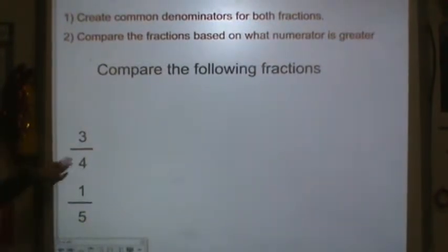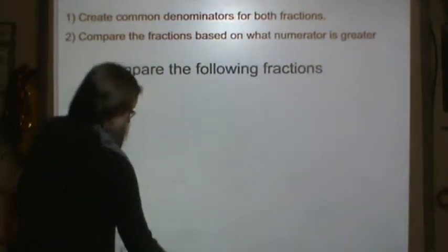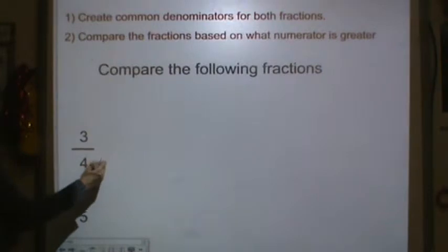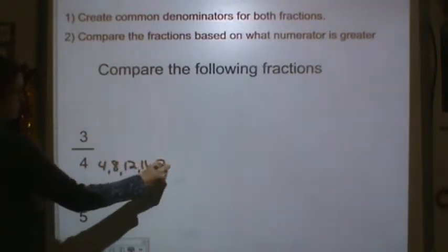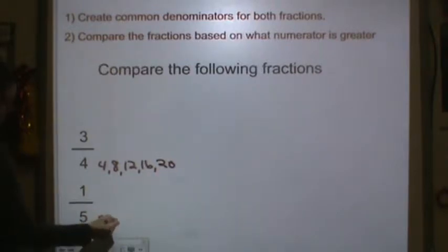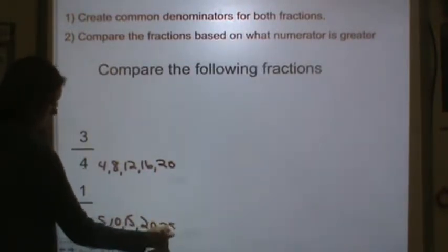Let's do another one. Again, we need to find a common denominator first, so we're going to list the multiples. 4, 8, 12, 16, 20, 5, 10, 15, 20, 25. There is a common denominator.